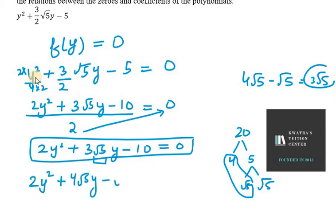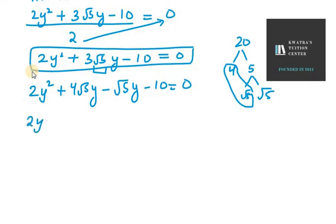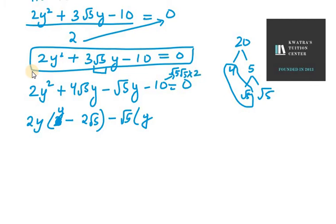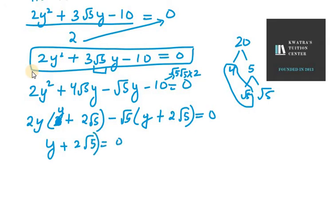So we write: 2y² + 4√5·y - √5·y - 10 = 0. Taking common from the first two terms: 2y(y + 2√5), and from the last two: -√5(y + 2√5). Factoring out (y + 2√5), we get (y + 2√5)(2y - √5) = 0. This gives us two values: y + 2√5 = 0 and 2y - √5 = 0.